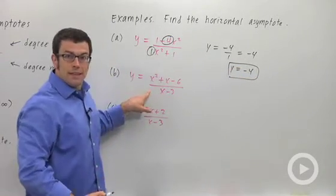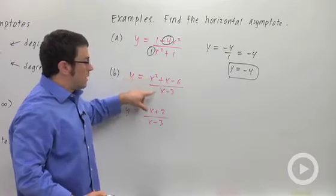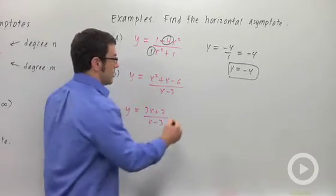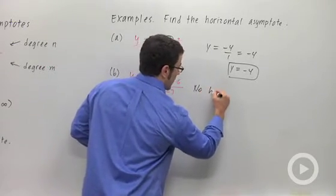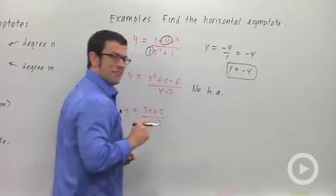Now in this instance, the degree of the numerator is bigger than the degree of the denominator, so there's no horizontal asymptote — I'll abbreviate it HA.